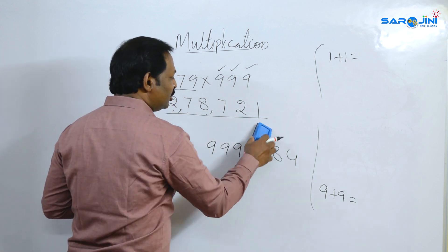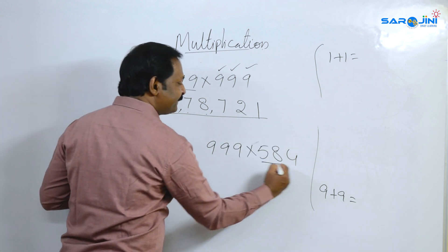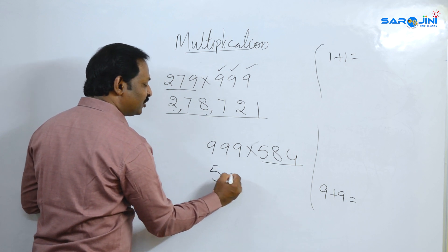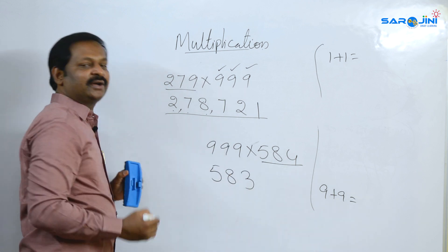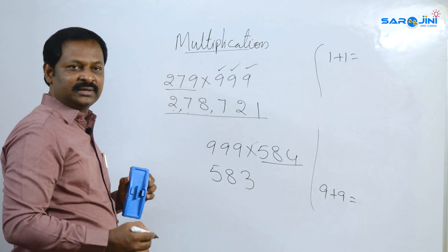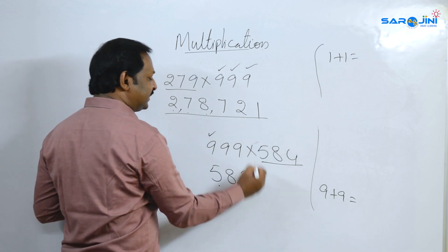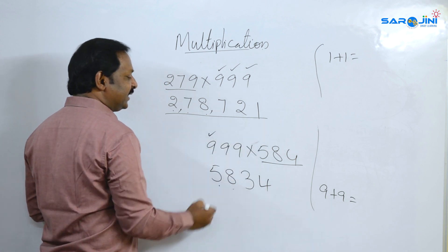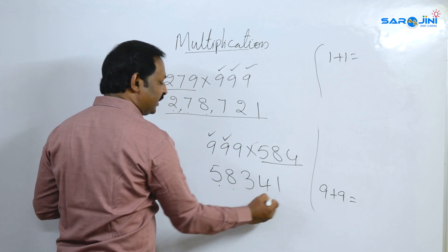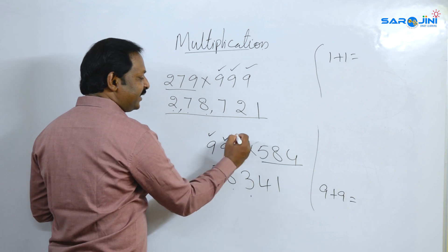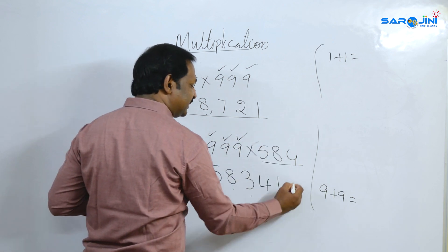For 584×999: one less is 583. Digits: 5→4, 8→1, 3→6. That is the answer.